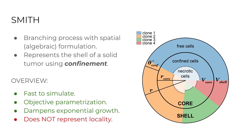This has the advantage that it is very fast to simulate. You can also create parameters related to biological processes — you can parameterize based on the size of the shell, and there is a geometric interpretation of your parameters. It also dampens the exponential growth, which is a problem of the branching process where unrestricted growth means you will very quickly explode exponentially. One limitation compared to cellular automata is that there is no representation of locality — no distance metric between individual subclones.